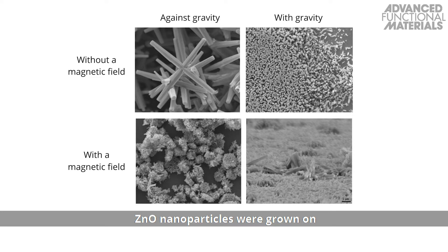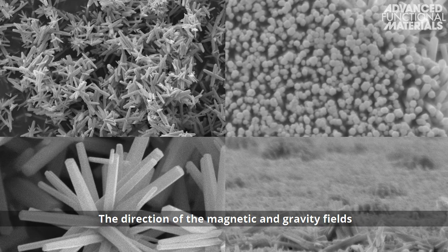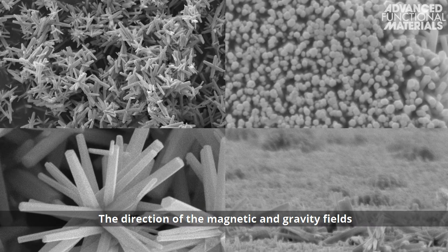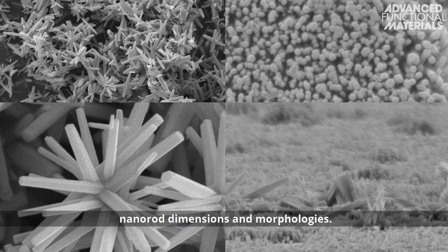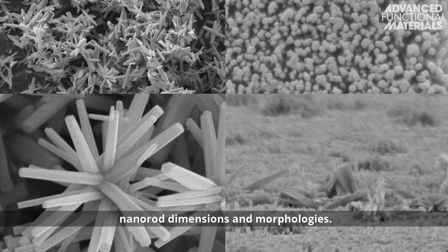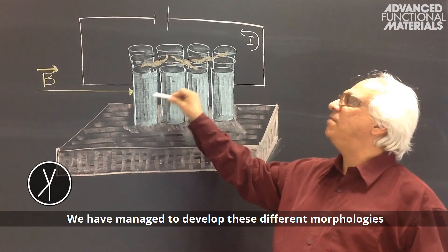Zinc oxide nanoparticles were grown on an indium-doped, tin oxide-coated glass surface, with or against gravity, and with or without a magnetic field. The direction of the magnetic and gravity fields were shown to affect the resulting nano-rod dimensions and morphologies.